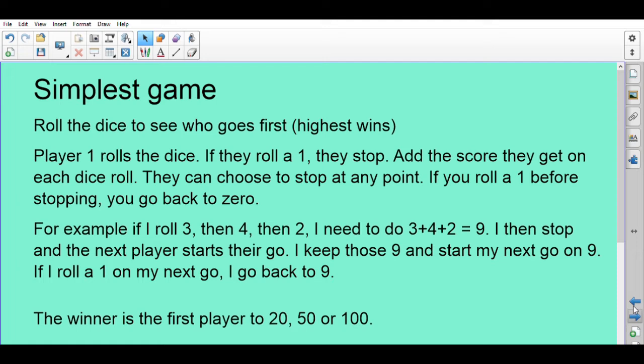Player one rolls the dice. If they roll a one, unfortunately they have to stop. But if they roll a two to a six, they add the score they get on each dice roll. Keep going, but if you get a one, you do have to go back to zero unless you choose to stop at any point. So you've got to avoid ones - that's the really important thing.